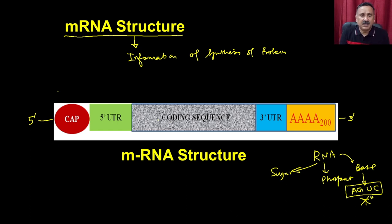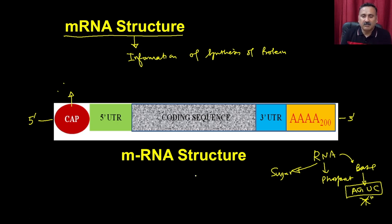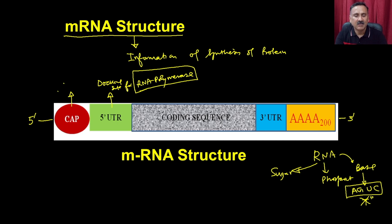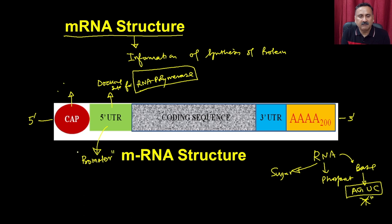As far as the structure of mRNA is concerned, it has a 5' cap which protects the RNA sequences because RNAs are very susceptible to degradation by RNases. Then it has the 5' UTR. The 5' UTR is a region that provides the docking site for the RNA polymerase and allows it to recognize the promoter regions. The 5' UTR contains the promoter, which has a definite composition.